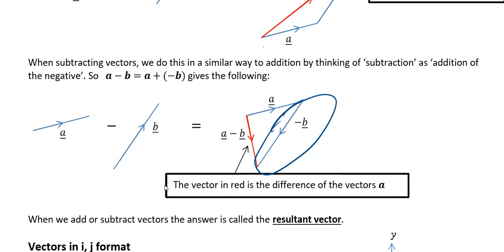So a minus b is the same as going along a and then along minus b.